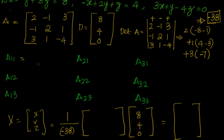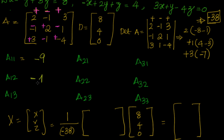Now let us find the cofactors. The sign pattern is: plus, minus, plus for the first row; minus, plus, minus for the second; plus, minus, plus for the third. A11: removing row 1 and column 1 gives 2×(minus 4) minus 1×1 = minus 8 minus 1 = minus 9. A12: the minor gives 4 minus 3 = 1, but with a minus sign, so A12 = minus 1. A13: the minor gives minus 1 minus 6 = minus 7, and A13 = minus 7. A21: the minor gives 4 minus 3 = 1, but with a minus sign, so A21 = minus 1.